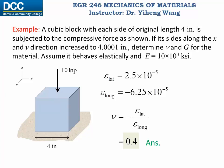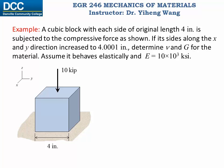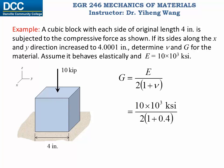To determine G, the modulus of rigidity, recall that G, E, and Poisson's ratio are related by G = E / [2(1 + nu)]. Substituting Young's modulus and Poisson's ratio, G equals 3.57×10³ KSI — the same unit as stress, just like Young's modulus. And that's the answer.